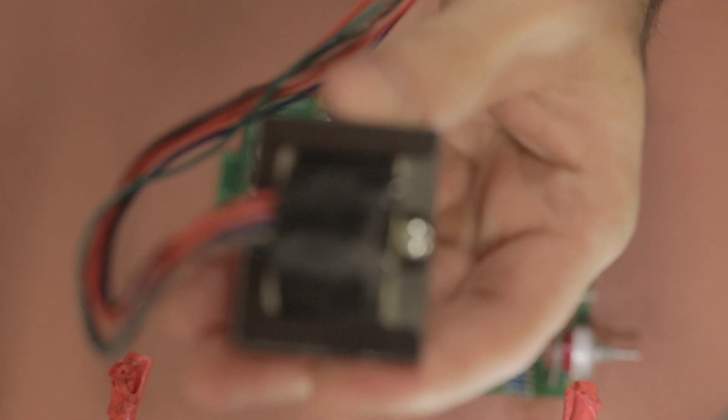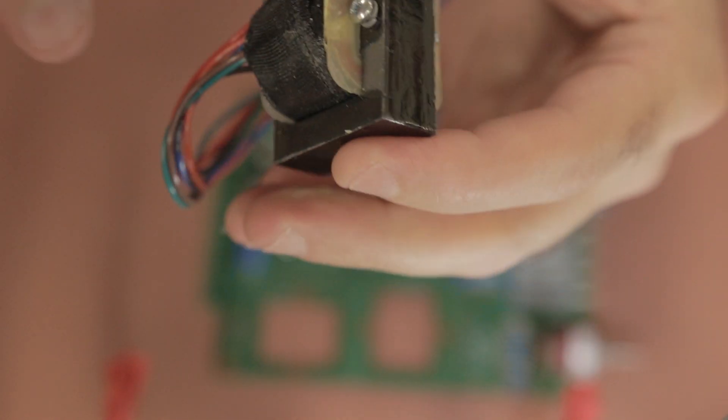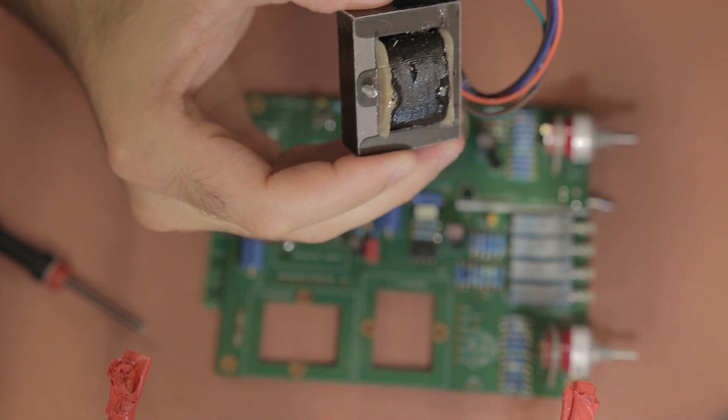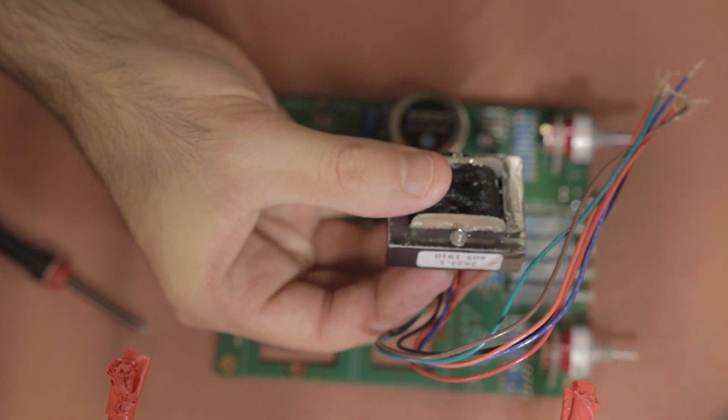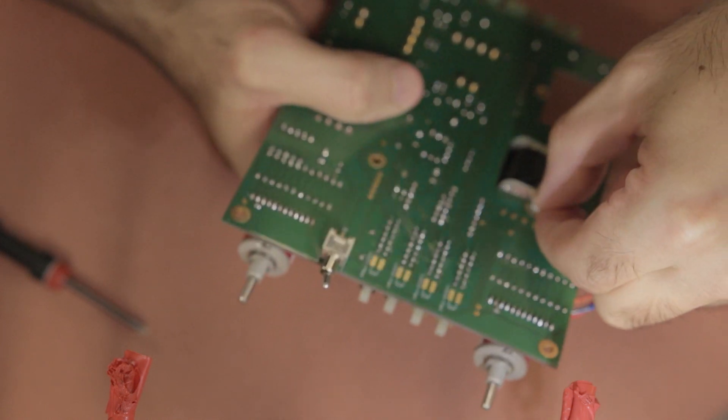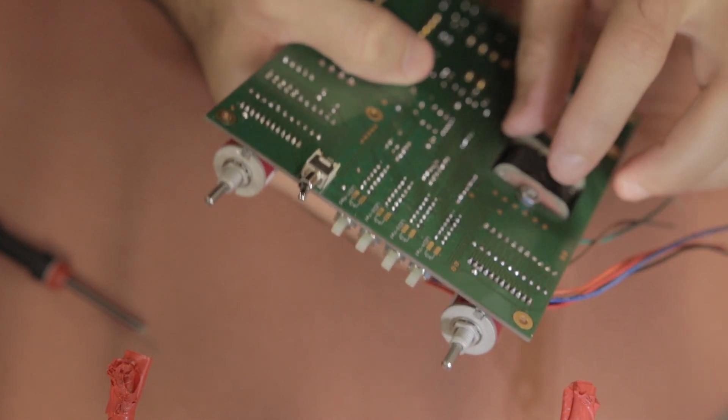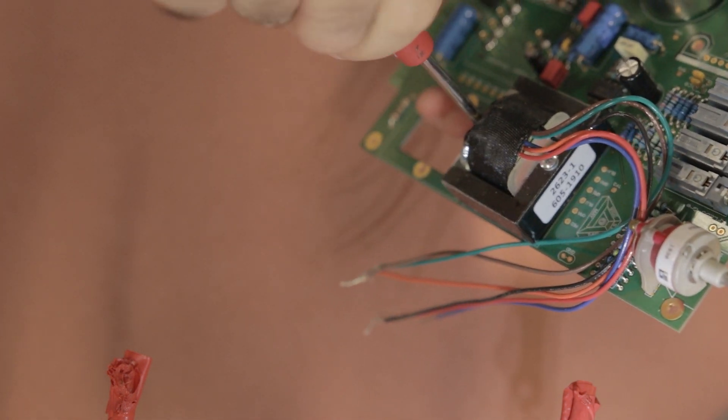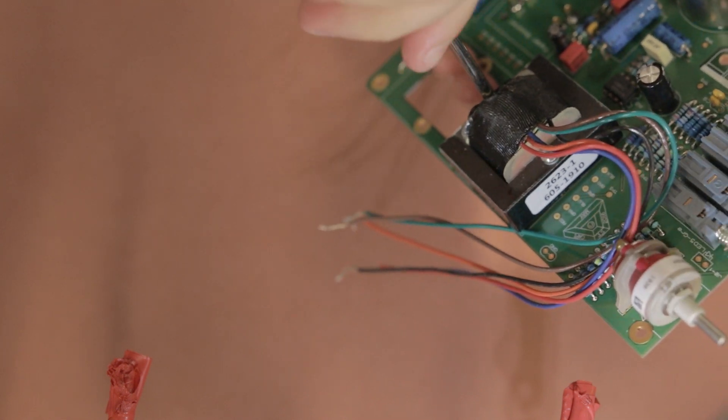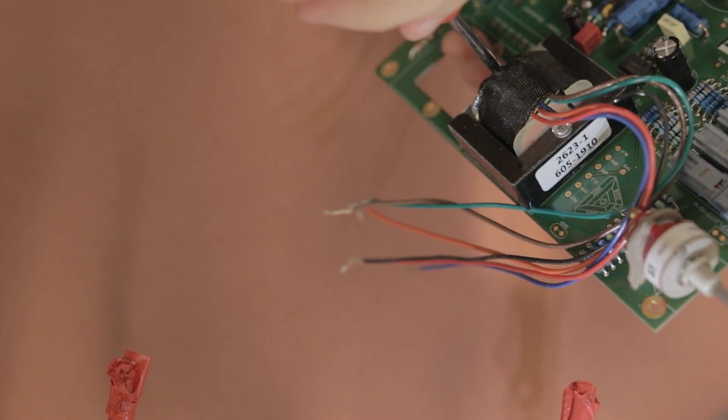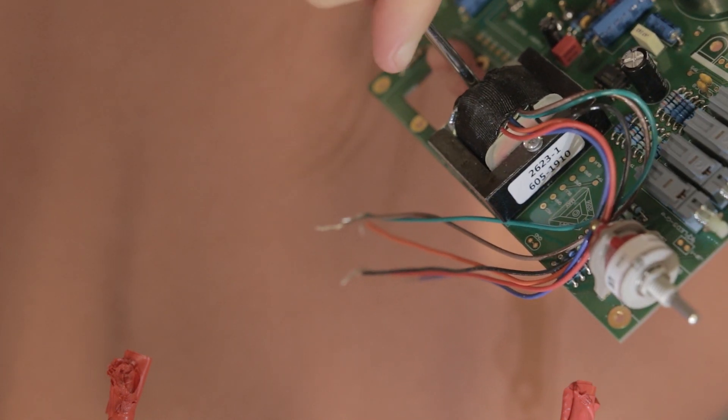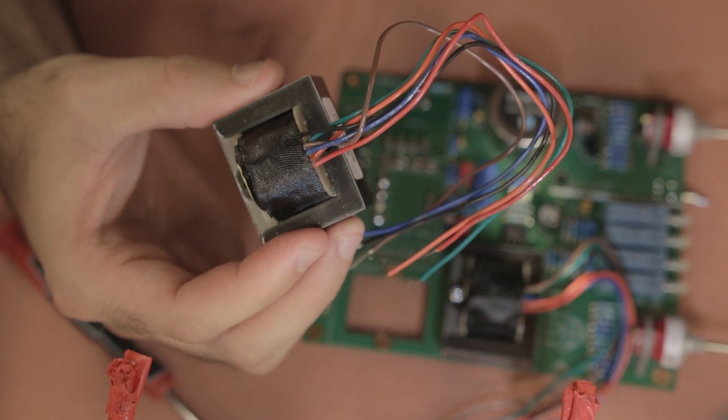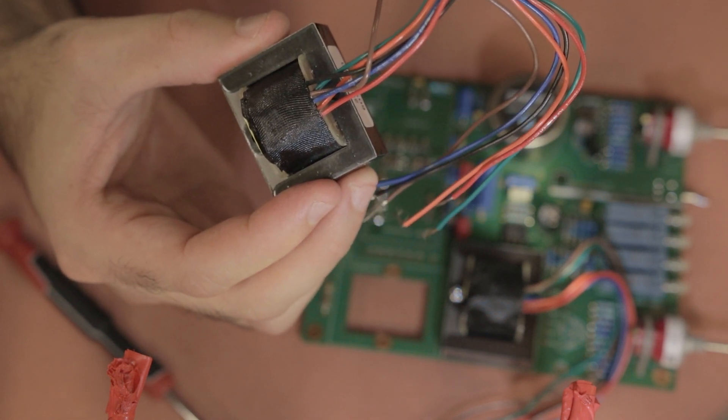Next up are the output transformers and you want to put these screws in first. Once they're in you need to put a washer on this back end and then you need to attach them to the board. The easiest way to do that is put this nut on and then hold it in place while you screw the screw into it. I found that was the easiest way to get these on the board otherwise it's quite fiddly. You also just want to make sure that the orientation of these transformers is correct, that the wires are facing outwards to the points that they need to be soldered to.